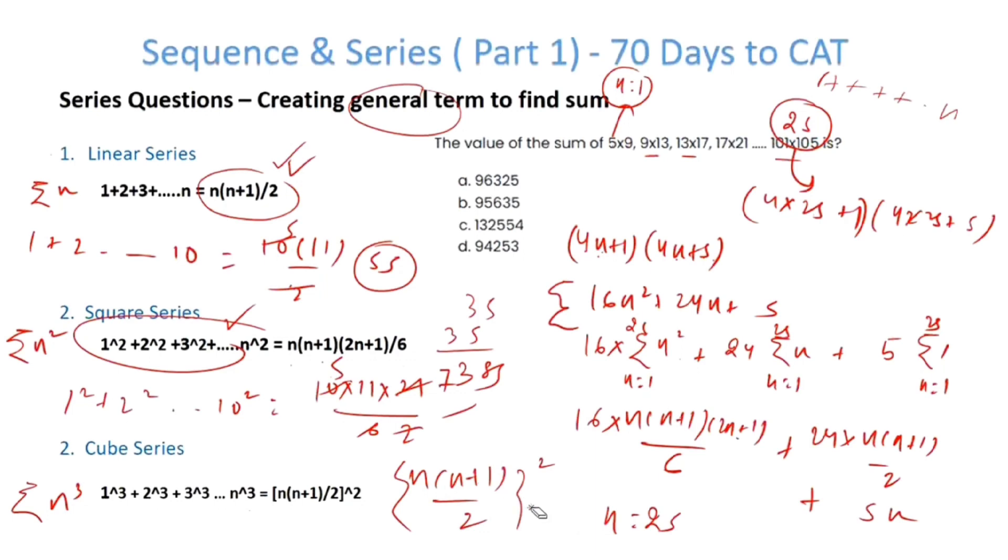What's a faster way of solving this? This is 16×25×26×51÷6. This is (24÷2)×25×26 + 5×25. This is 8×3×17×8×25. This will have two zeros.